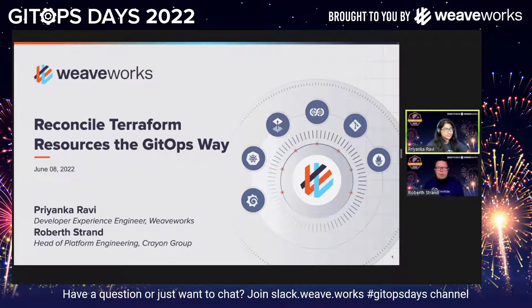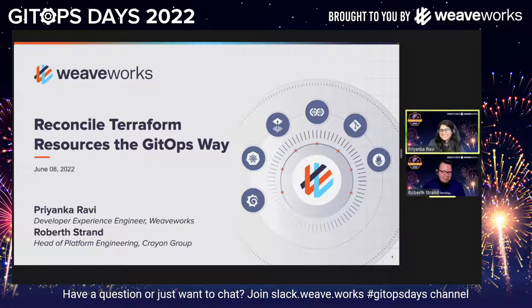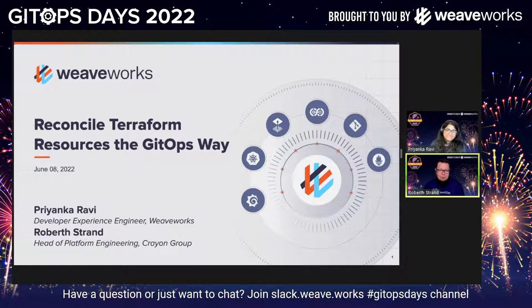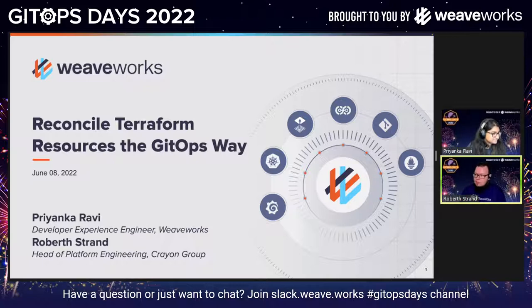My name is Robert Strand. I'm the head of platform engineering at Crayon Group. I wanted to jump on this one because I'm a HashiCorp ambassador and I work a lot with Terraform, and Crayon is going to use some of these technologies. I'm also going to be talking tomorrow about that in particular, so come back tomorrow and I'll talk more about Crayon and what we're doing.